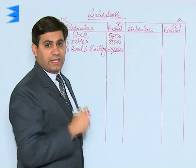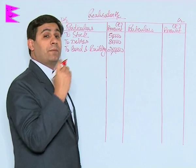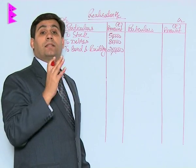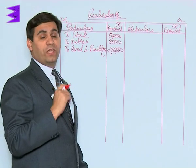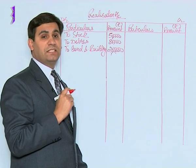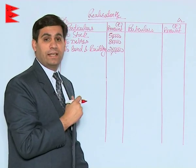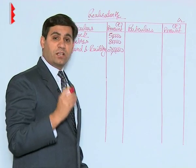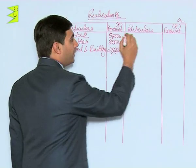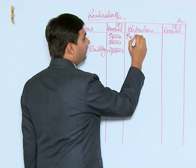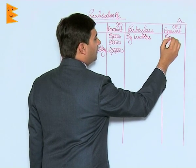Now we transfer all outsiders' liabilities — that is, liabilities except those of the partners — to the credit side of the realization account. Only the creditors' amount of ₹50,000 should be transferred here, because reserves and partners' capital both represent partners' liabilities and are excluded.